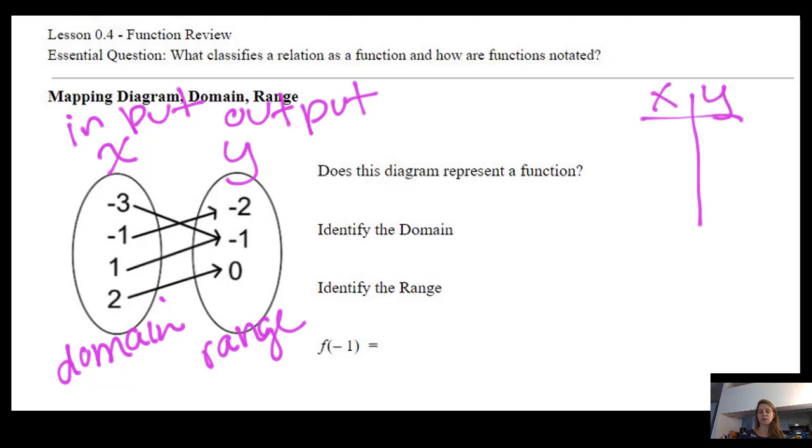But if we don't remember how to read mapping diagrams, one thing I like to do is first write it as a table. This is a table in disguise. So we have negative three goes to negative one, negative one goes to negative two, one goes to negative one, and two goes to zero.